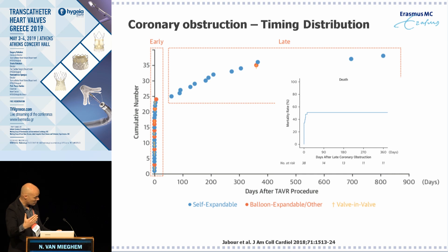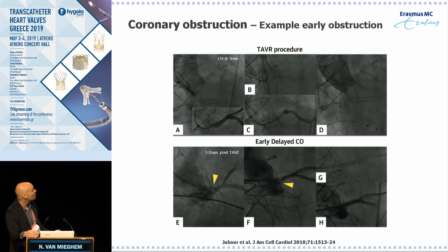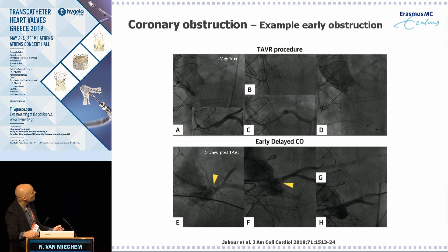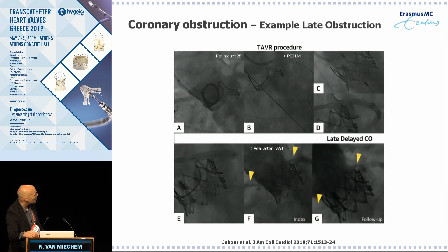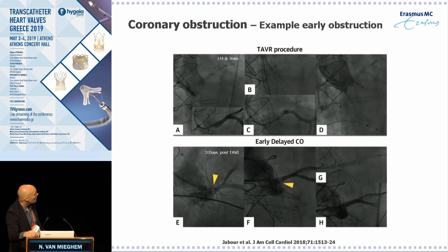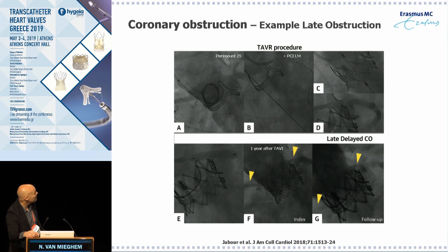Once delayed occlusions occur, they are associated with a high mortality rate, attesting to the difficulty of re-engaging these coronaries after valve-in-valve or native valve procedures. Here are two examples from Richard's paper: an early delayed coronary obstruction — a patient with a CoreValve Evolute where, three days after implant, there was haziness at the coronary ostium and the patient required stenting.